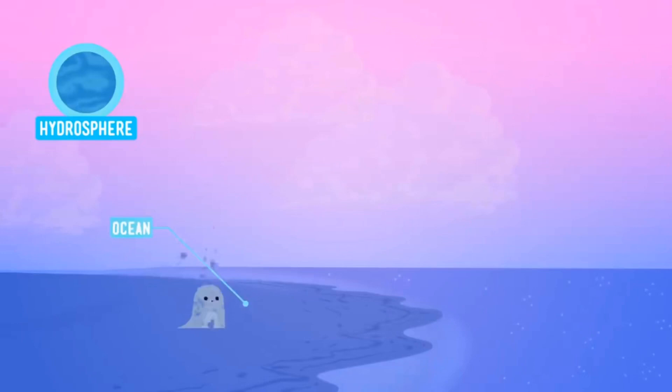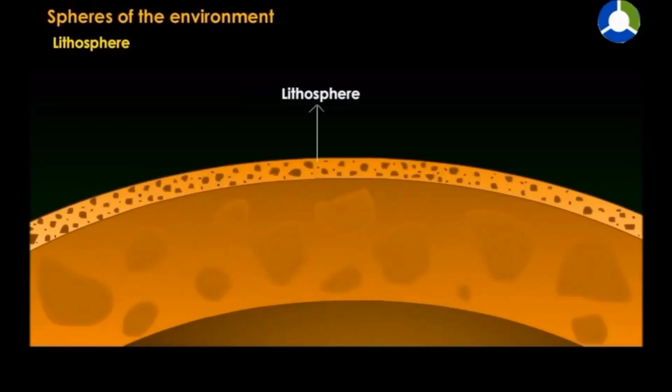The oceans, lakes, streams, groundwater, rivers, and of course rain are the parts of the hydrosphere. Three-fourths of the Earth's surface is covered with hydrosphere.